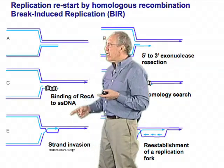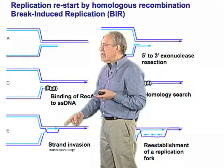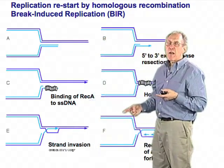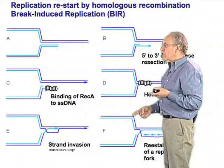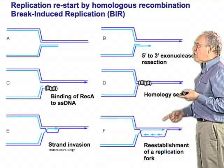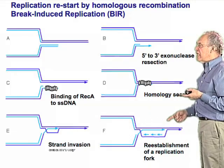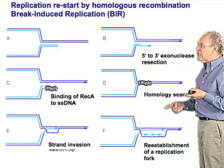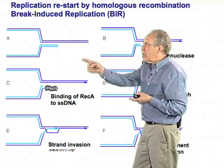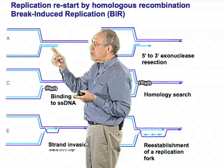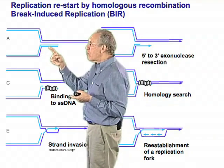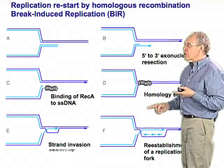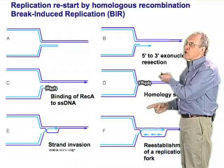Here in break-induced replication, this strand invasion allows time for the whole DNA replication apparatus to be assembled, so that both leading and lagging strand DNA polymerization can begin. What was a broken DNA molecule — the product of a stalled replication fork — has now reinitiated replication so that replication can continue.